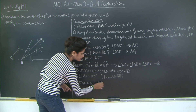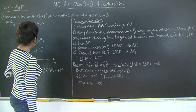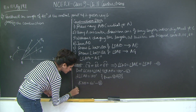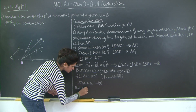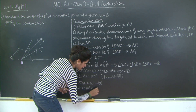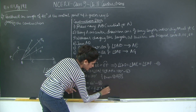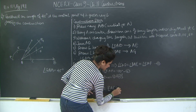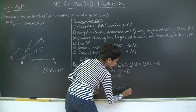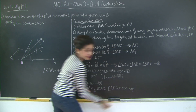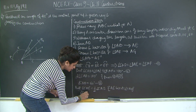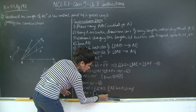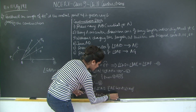Now, angle CAE equals half of angle CAD, because AE bisects angle CAD. Therefore angle CAE equals half of 60 degrees, which equals 30 degrees. Mark this as statement 4.